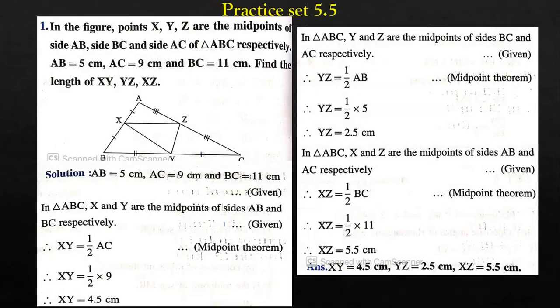Next is practice set 5.5, question 1. In the figure, points X, Y and Z are midpoints of sides AB, BC and AC of triangle ABC respectively. AB = 5 cm, AC = 9 cm and BC = 11 cm. Find the lengths of XY, YZ and XZ. X and Y are midpoints of sides AB and BC respectively, so by the midpoint theorem, XY is half of AC, which is half of 9 cm = 4.5 cm.